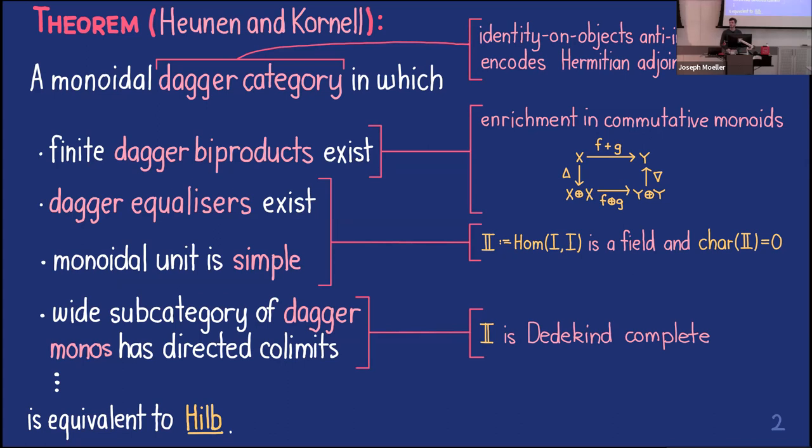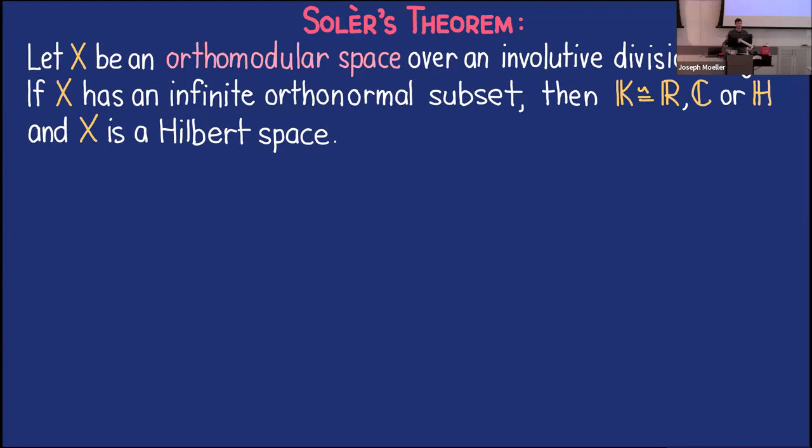If we have all these assumptions, then our monoidal dagger category is equivalent to the dagger category of Hilbert spaces and bounded linear maps. To give a bit more context for what I'm going to tell you about today, I need to tell you a little bit about how Chris and Andre proved this result. The key magic ingredient that does a lot of the hard work is this theorem called Soler's theorem.